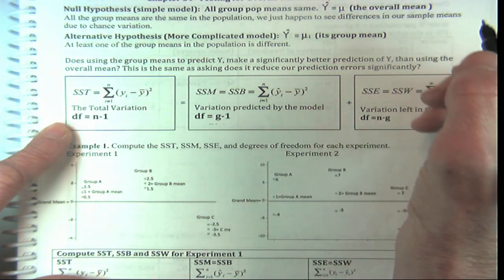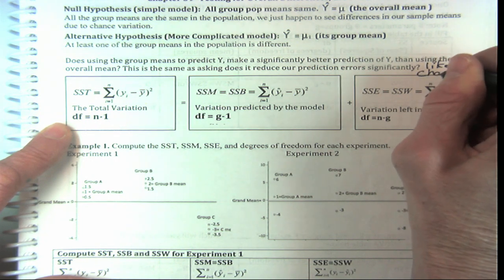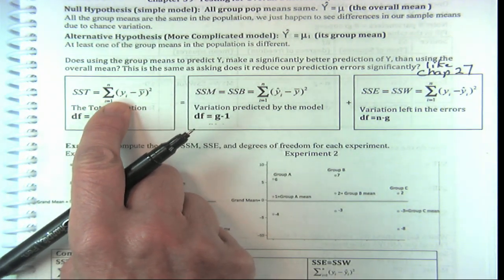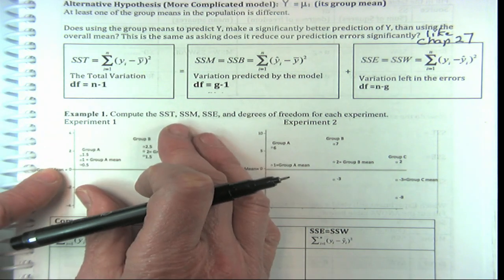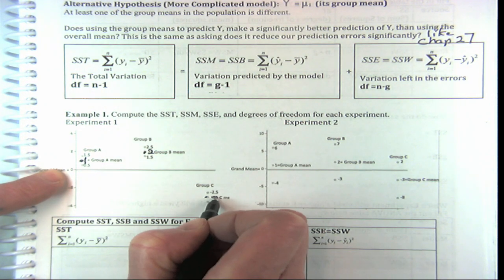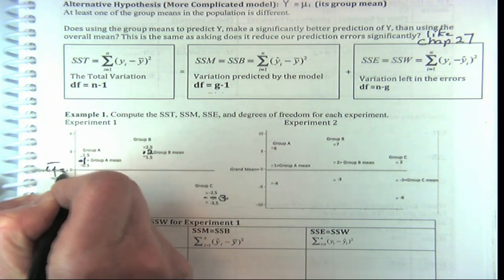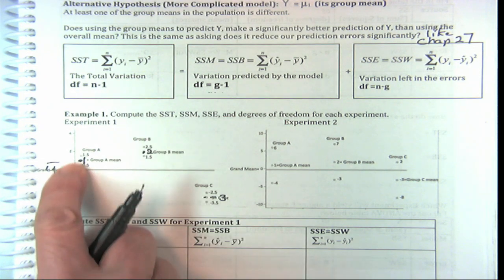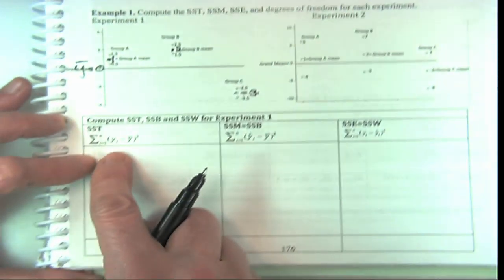Does using group means to predict Y make a significantly better prediction than just using the overall mean? This is the same thing we've been doing before — just like chapter 27. We have the sum of squares total, which for each of the nine observations in experiment one — with group means of one, two, and negative three, and overall Y-bar of zero — we're going to compare the total variation of these nine y's. Let's compute it: the points are 1.5, 1, 0.5 for group A; 2.5, 2, 1.5 for group B; and negative 2.5, negative 3, negative 3.5 for group C.